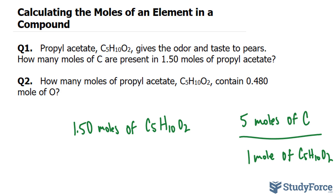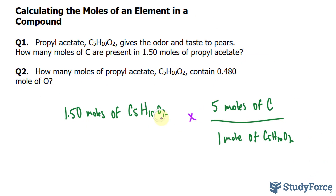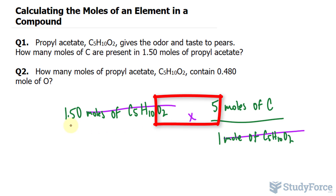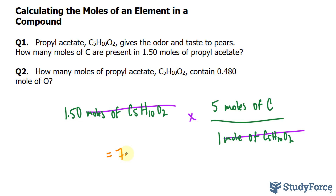As you can see, if we multiply these two numbers, given that this is a rate, the unit moles of C5H10O2 will completely cancel out, leaving us with 1.50 times 5. Computing these two numbers, you should end up with 7.50 moles of carbon.